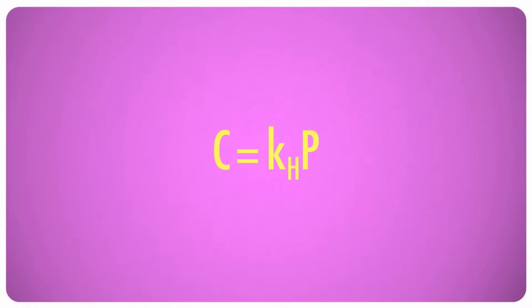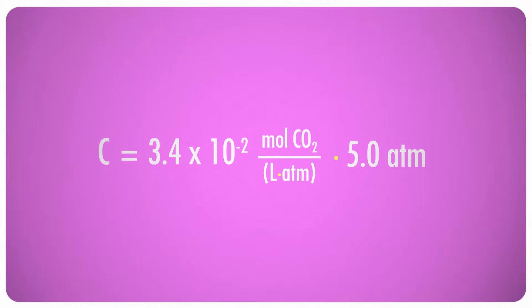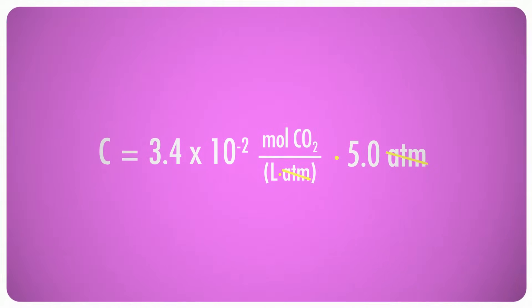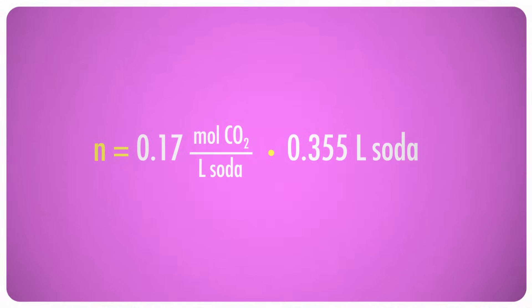The pressure of CO2 in a can is 5.0 atmospheres, and you can look up the solubility of CO2 in an aqueous solution, 3.4 times 10 to the negative 2 moles per liter atmosphere. So, the concentration of dissolved CO2 is 0.17 moles per liter. Now, there are 355 milliliters, or 0.355 liters, of cola in a can.